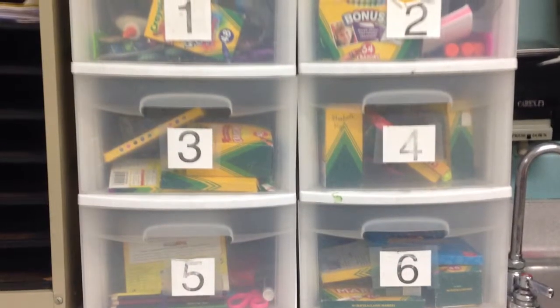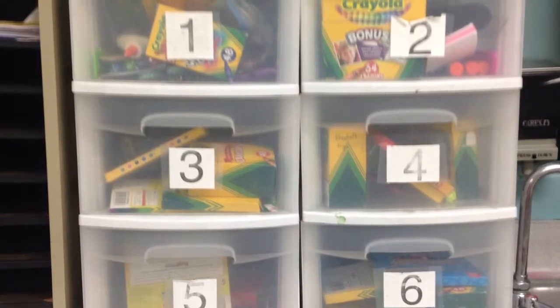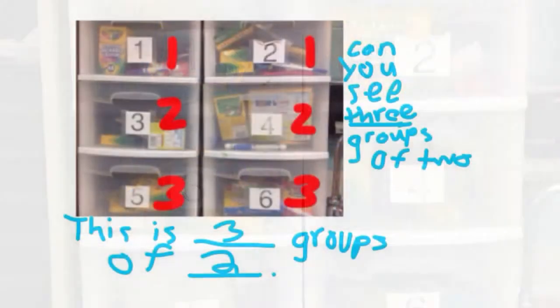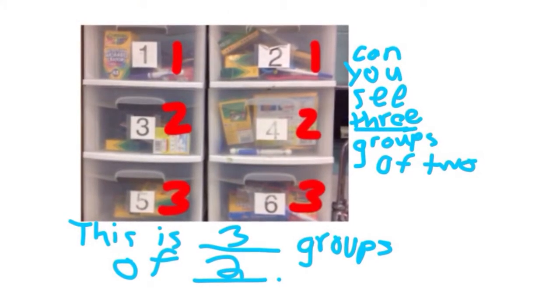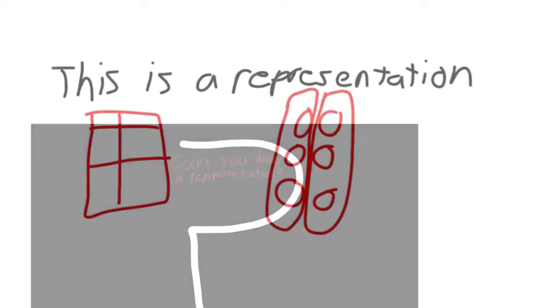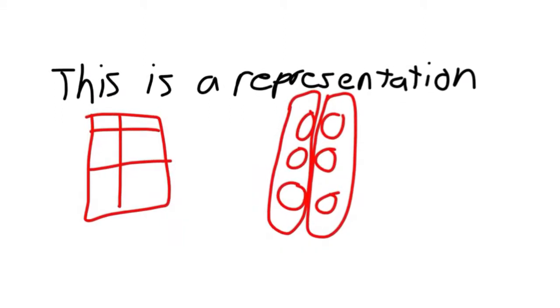This is three groups of two. Can you see three groups of two? This is three groups of two. Can you draw a representation? This is a representation of three groups of two.